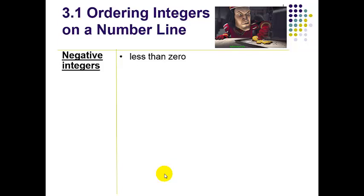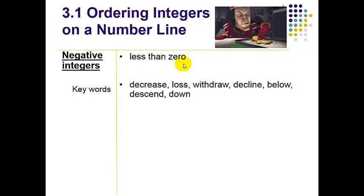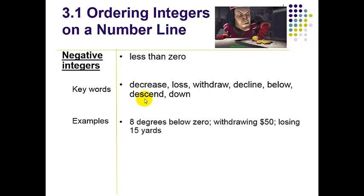Negative integers are less than zero. Some of the key words that we have are decrease, loss, withdraw. Withdraw means to take money out of a bank account. A decline below, so like 30 yards below sea level, descend, the plane would make a descend for landing, and down. Those would all be things that would represent a negative number.